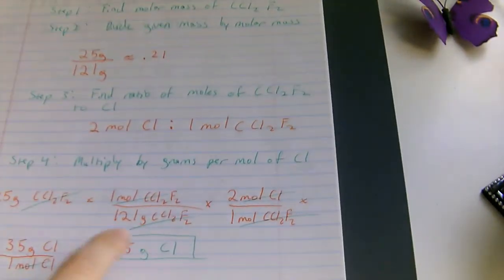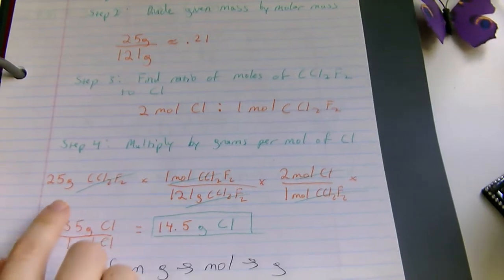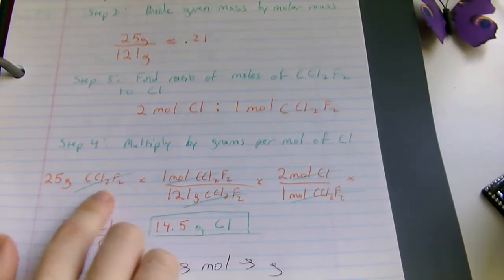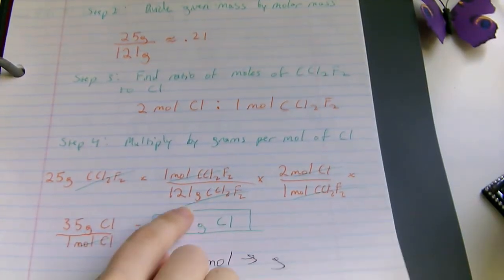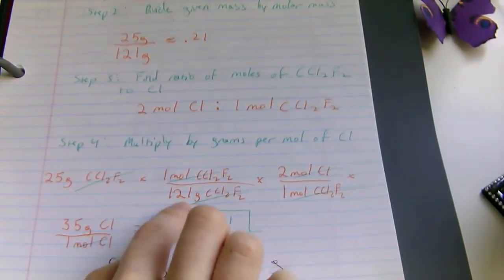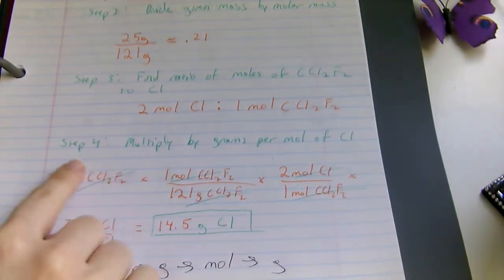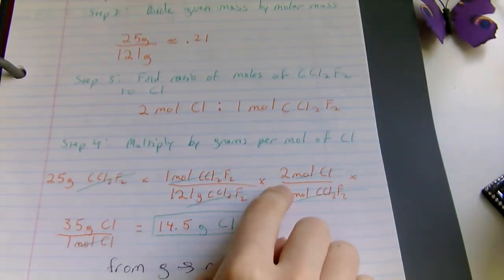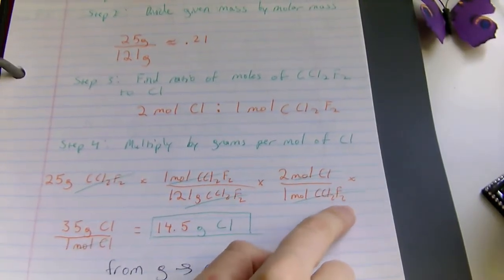And step four, multiply by grams per mole of chloride. We have 25 grams in the whole thing times one mole of the whole thing divided by the molar mass. We're setting this up to cancel out these units. We continue to multiply by two moles of chloride, which relates to one mole of the whole thing.